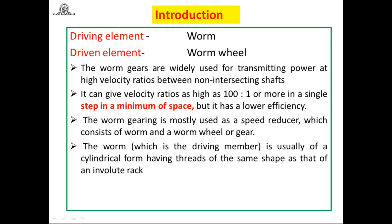The main advantage of worm and worm gear is to transmit power at high velocity ratios. A speed reduction ratio of 100 to 1 can be achieved in a single step, making it a compact drive compared to helical, bevel, and spur gears. However, efficiency is low compared to spur, helical, and bevel gears.